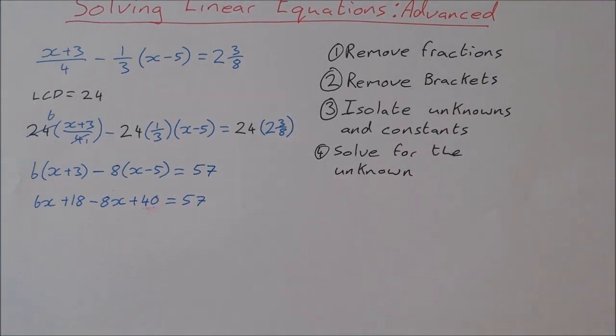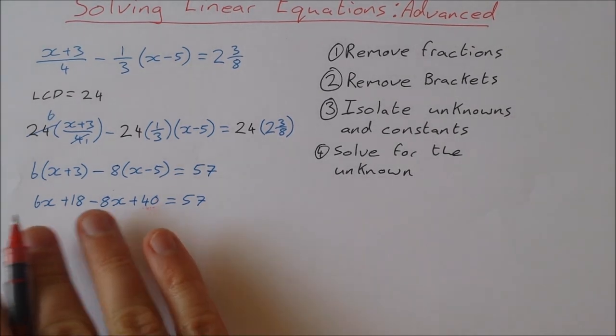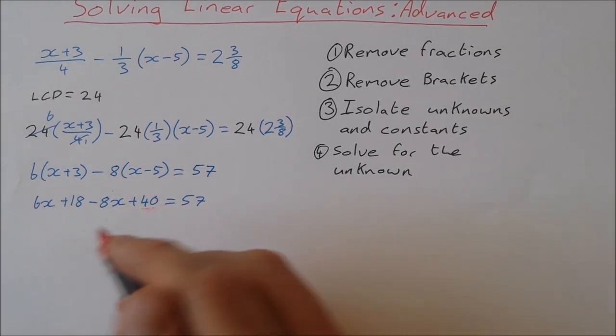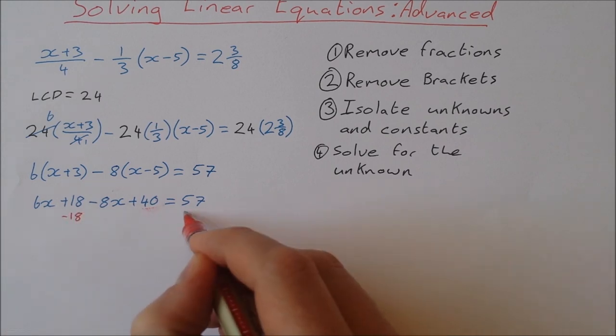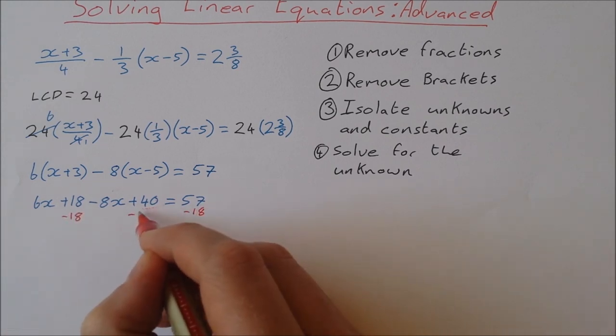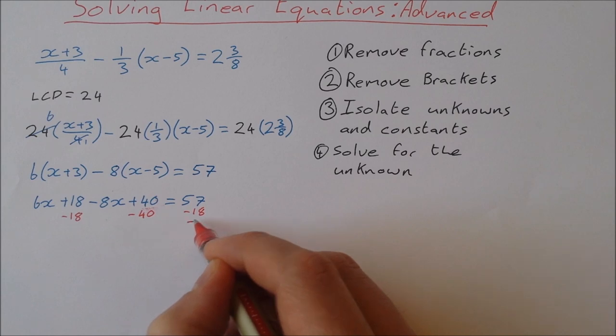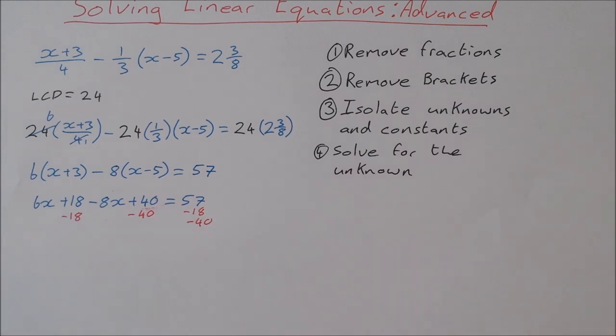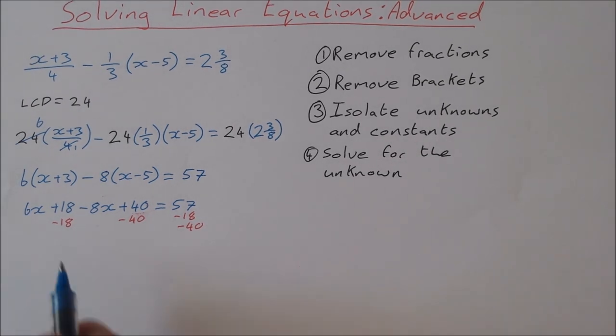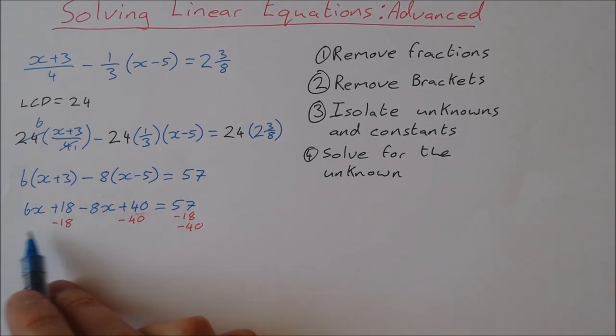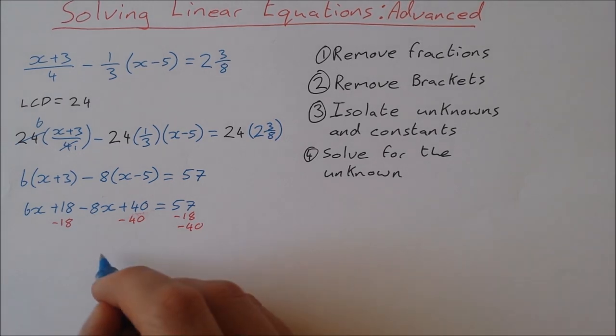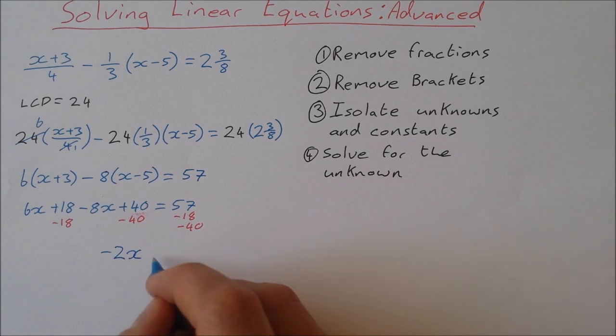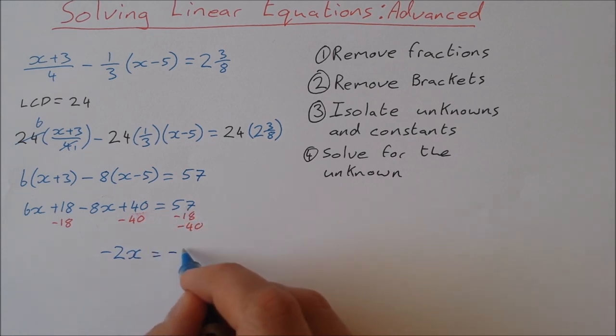Now I want to isolate the x's on one side and the numbers on the other, so I'm going to take 18 from both sides and I'm going to take 40 from both sides also. So on the left-hand side I'm going to be left with 6x - 8x, which is just -2x. No constants left. 57 - 18 - 40 works out to be -1.